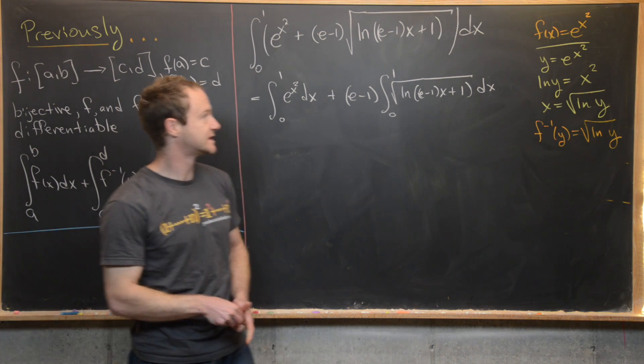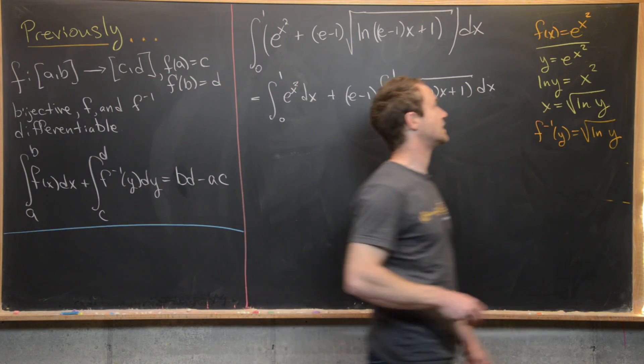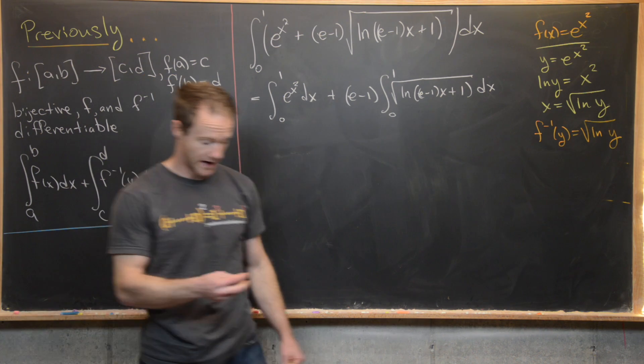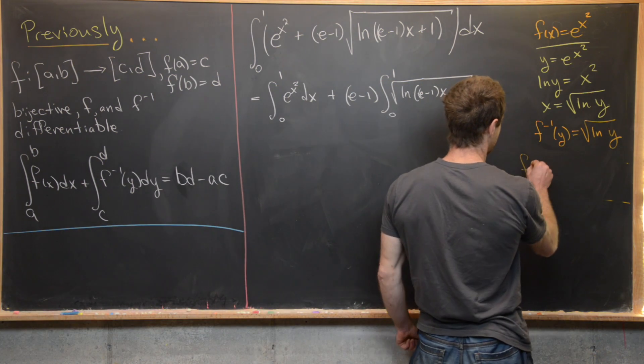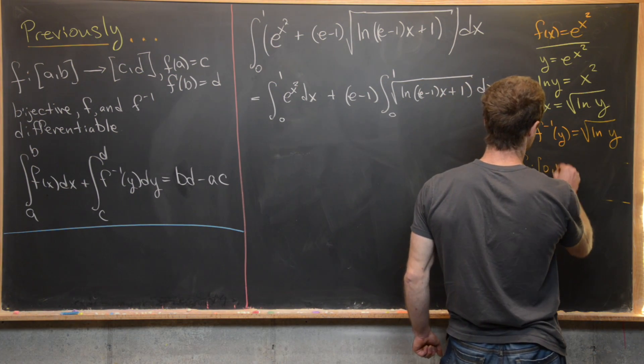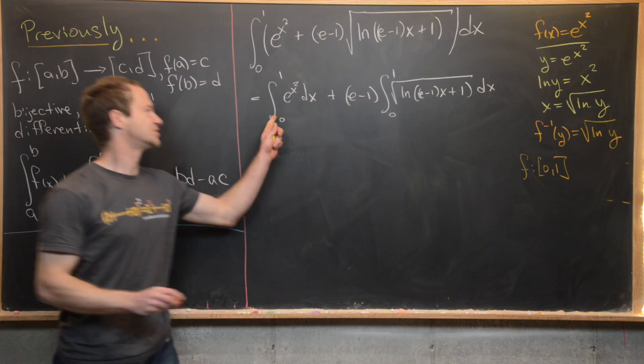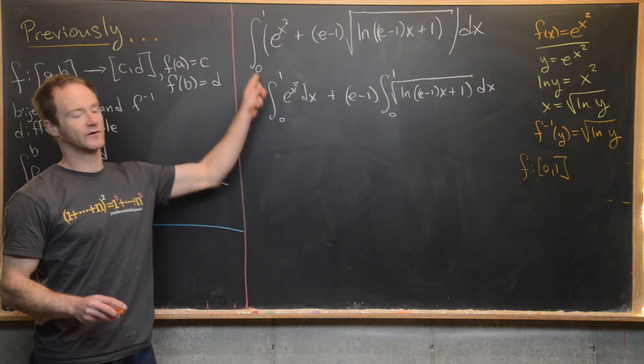Another thing that we want to notice is that if we've got f of x equal to e to the x squared, then that means f is taking the interval [0, 1], which is our integration domain over here,